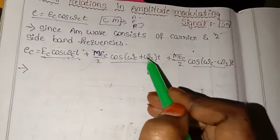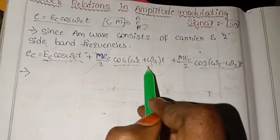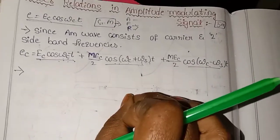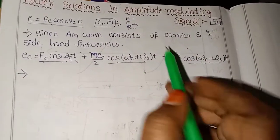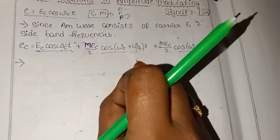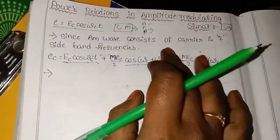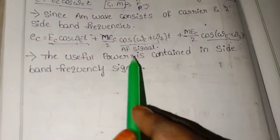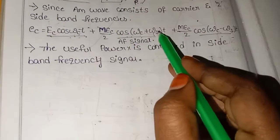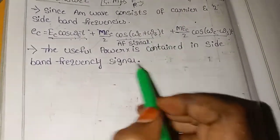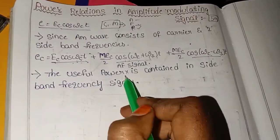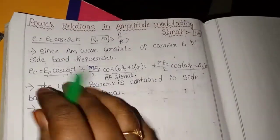The message signal has low power — it is an audio frequency signal, which is the source signal. The audio frequency signal produces two sideband frequencies. The useful power of the AF signal is contained in the sideband frequency signals. The power is represented by the sideband frequencies.